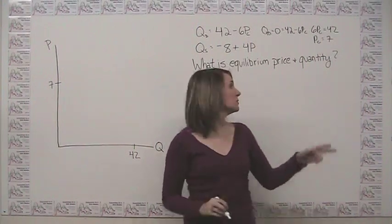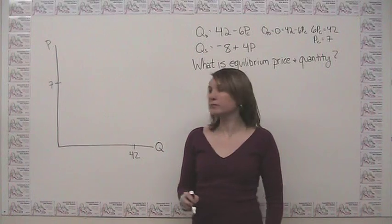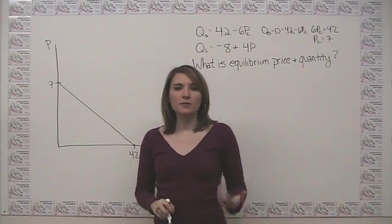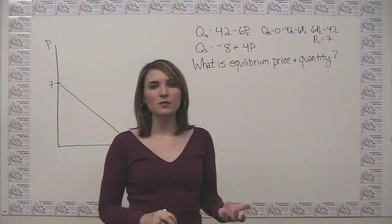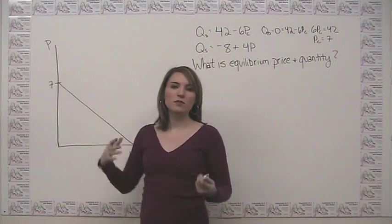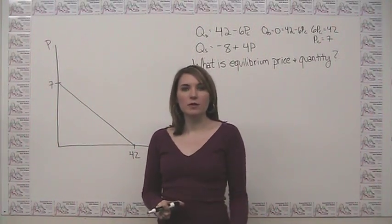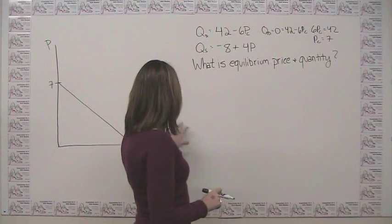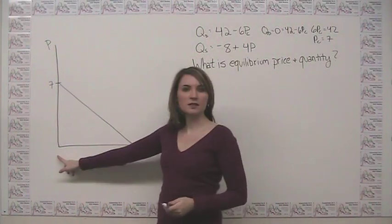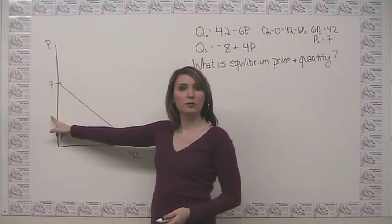Now we can just connect the dots because we know that this particular equation is going to give us a straight line demand curve. Now let's do the same thing with the supply curve. If you remember from before, since supply curves start somewhere up here and slope upwards, we really only have one intercept to think about. So let's at least start by figuring out what that one looks like. Say that intercept happens where quantity is equal to 0.